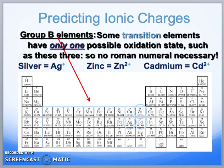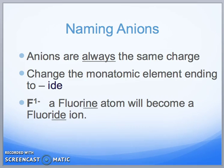We also have exceptions to the rules when it comes to transition elements in which these particular elements have a set charge — and this would be really important for you to write down. Silver always has a charge of plus 1. Zinc has a charge of plus 2, and cadmium has a charge of plus 2 as well. When we're naming anions, they always have the same charge, and many times they're going to end with the suffix '-ide.' For example, fluorine would be called a fluoride ion.